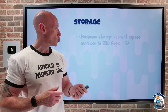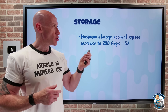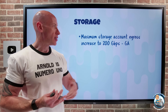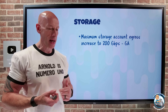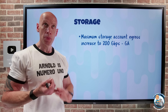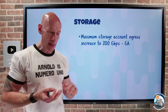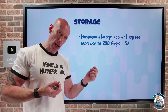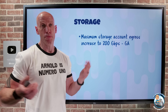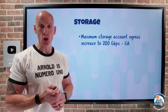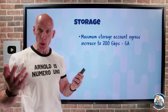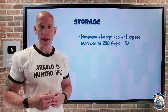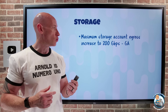On the storage side, the maximum storage account egress has been increased to 200 gigabits per second — that's for commercial, China, and GovClouds. That's up from 120 Gbps, and it applies to existing and new storage accounts. You don't need to do anything; you'll just see that default egress amount go up.